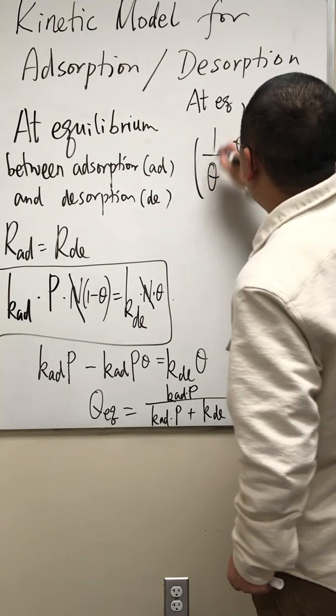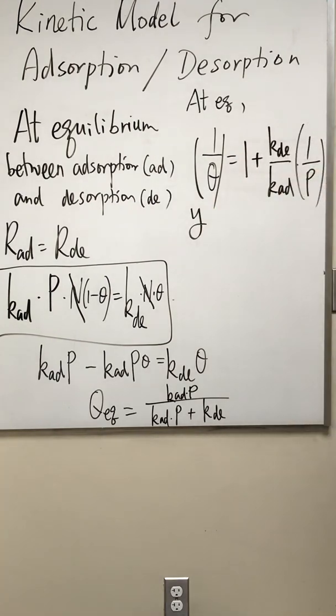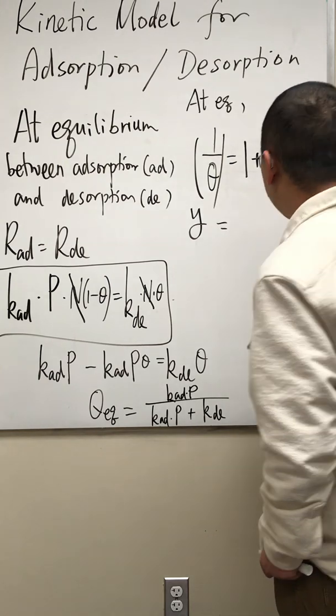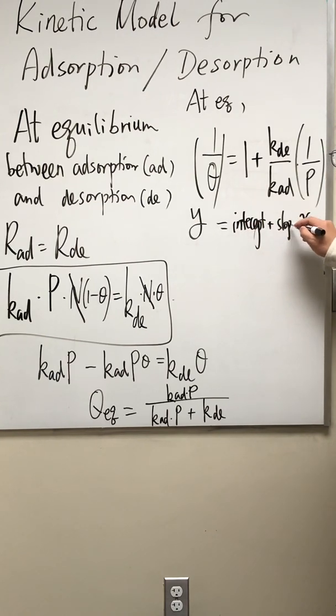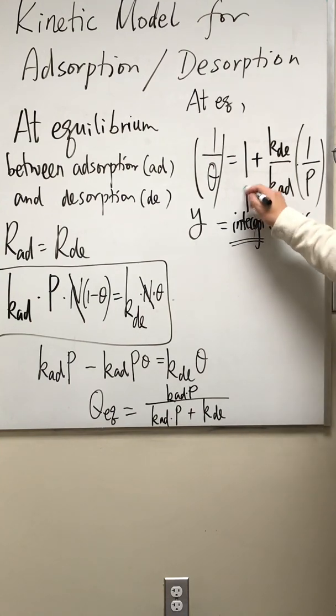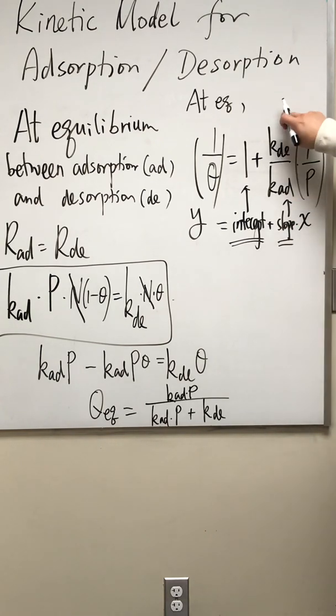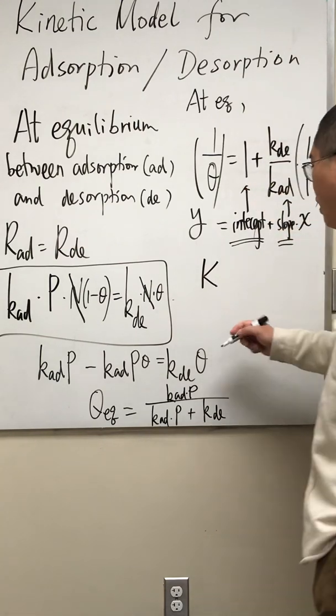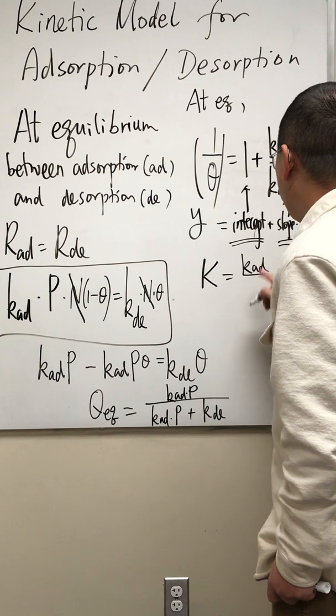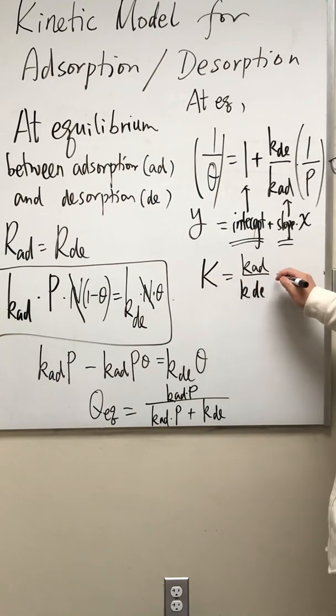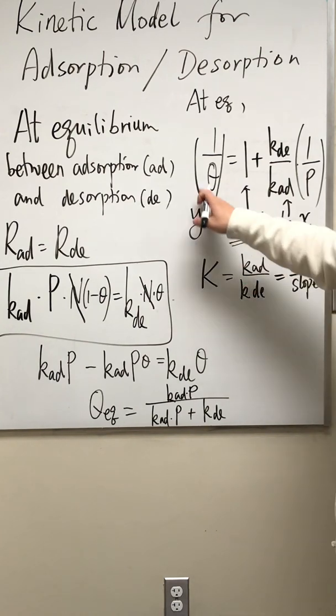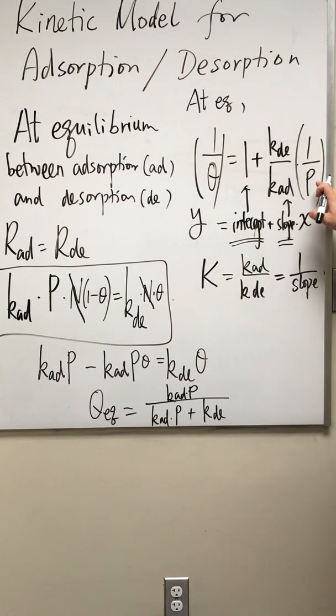And immediately we can tell if we use one over theta as our vertical axis or y-axis, one over P as our horizontal axis or the x-axis, we're looking at y equals the intercept plus slope times x. What's the intercept? Intercept is just one. What's the slope? The slope is the rate constant of desorption divided by the rate constant of adsorption. And sometimes we use an uppercase K to be the ratio between the rate constant of adsorption and the rate constant of desorption. Then you can see this K is simply one over the slope we obtain from this one over theta versus one over P linear plot.